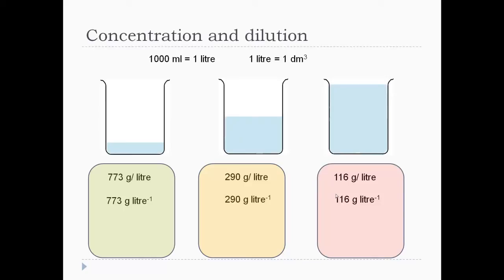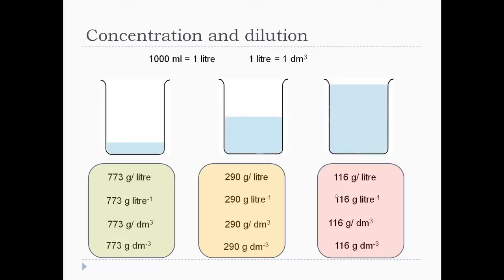So 773 grams per litre on the left hand side and 116 grams per litre on the right. And since one litre equals one dm³, we can also write this as 773 grams per dm³. It's just different types of nomenclature that chemists use — it's always an amount per volume.